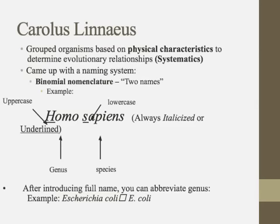The first person who came up with a classification system that is widely used today was a man by the name of Carlos Linnaeus. At that time they didn't know much about DNA, so the only way he knew to group organisms was based on physical characteristics. When you use physical characteristics to determine who is related to whom, this is called systematics — that was the name of the science he was studying.